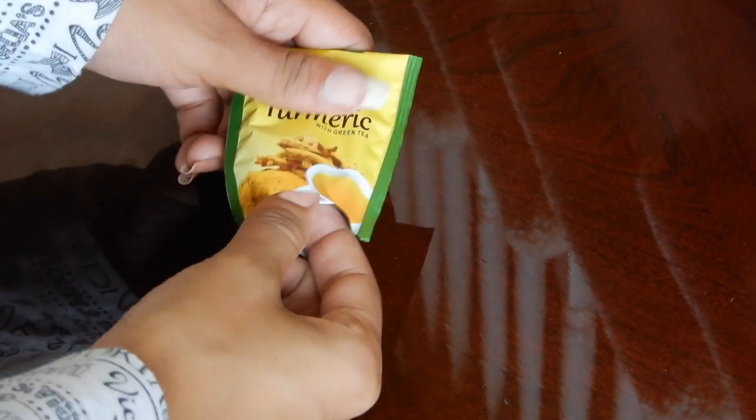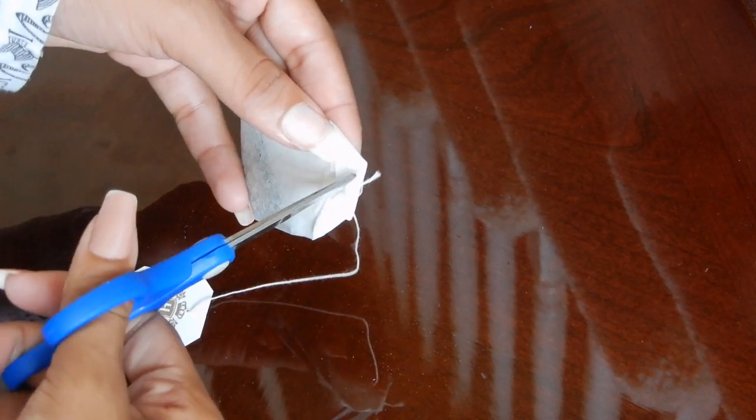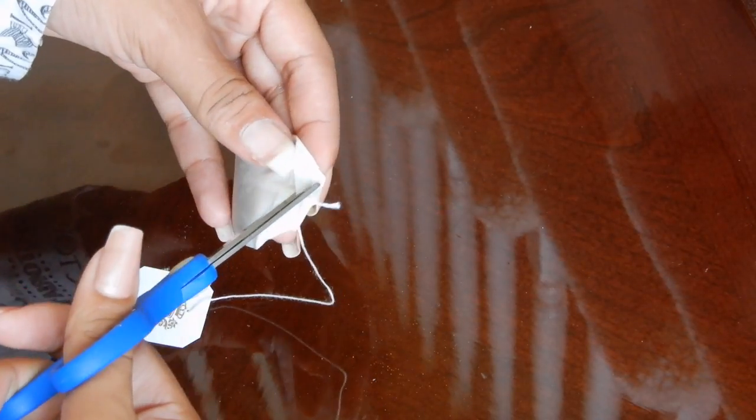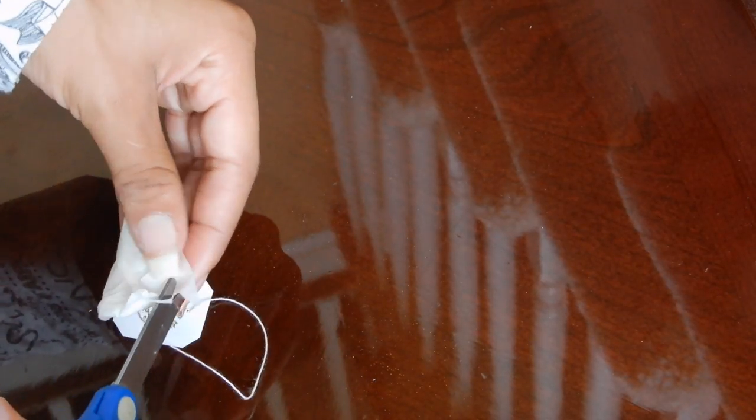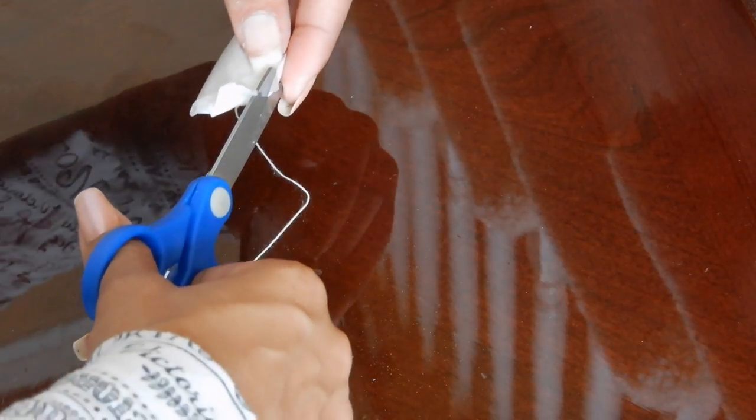After that, take the teabag and cut off a small enough piece to cover the entire crack on your nail. I cut at the top just so that I wouldn't have to waste a whole teabag.